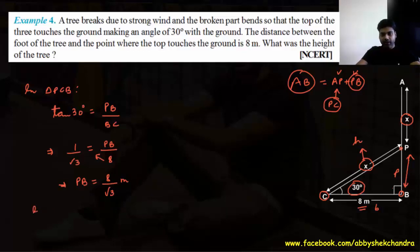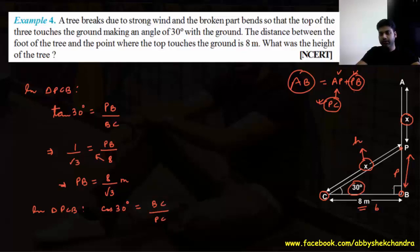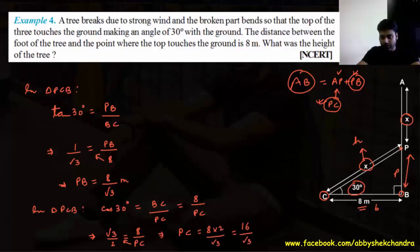Now we need to find PC, which is the hypotenuse, while BC is the base of 8 meters. The trigonometric ratio connecting base and hypotenuse is cos. Cos 30 degrees equals BC by PC, so root 3 by 2 equals 8 by PC. Cross multiplying gives PC equals 16 by root 3 meters.